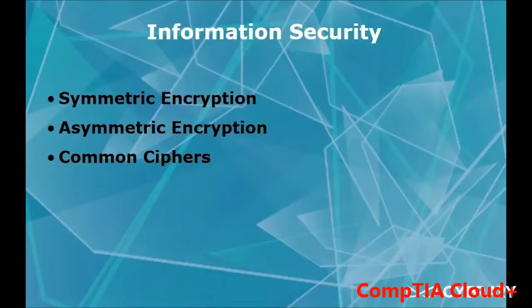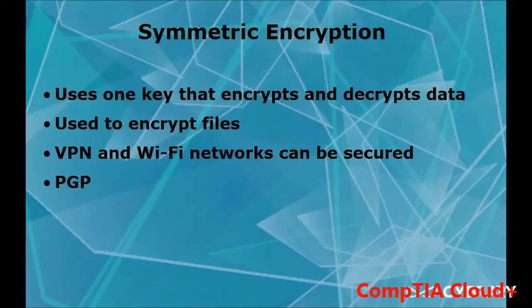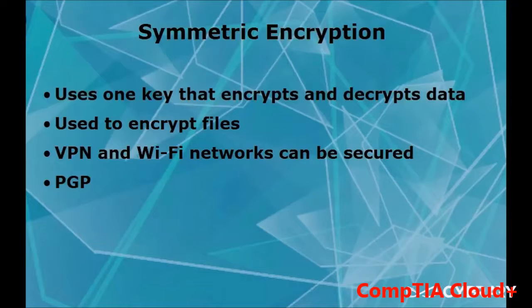In information security we have encryption: symmetric and asymmetric, along with common ciphers that appear in the cloud. Symmetric encryption allows people to encrypt files or folders so only those with the key can see them. A common program for this is PGP, which lets you create tokens and assign them to files and folders. Symmetric encryption uses one key — that same key encrypts and decrypts the data.